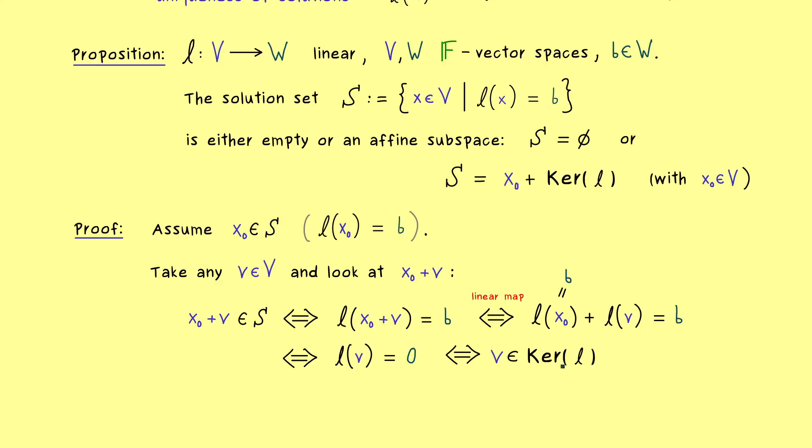So there we have it. This shows the form of the solution set. And this form also explains why we know that the kernel tells us about uniqueness. Only in the case that the kernel is trivial, so given by only the zero vector, we get that we only have one solution for the solution set.